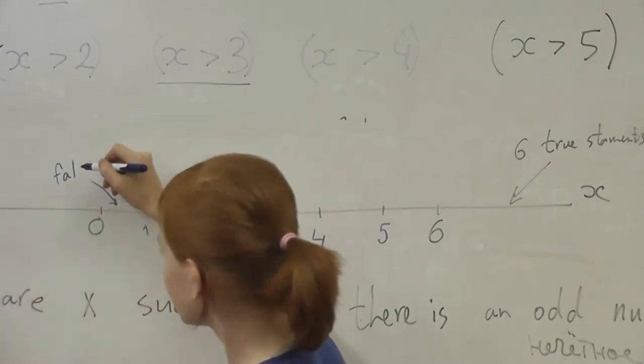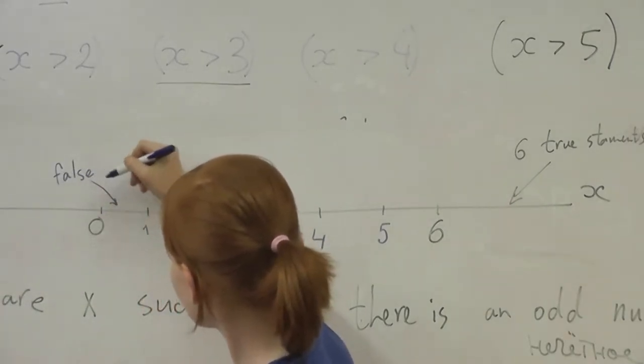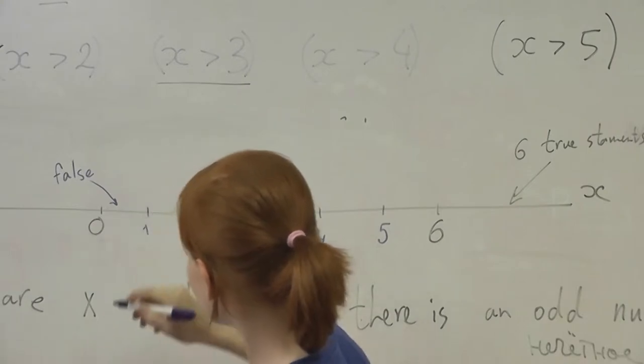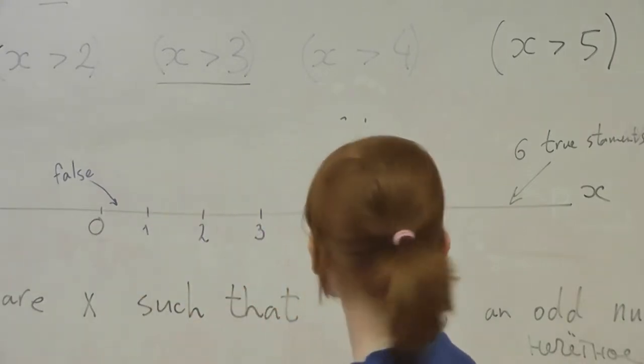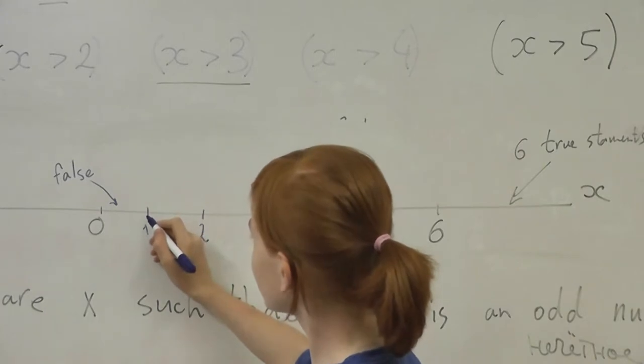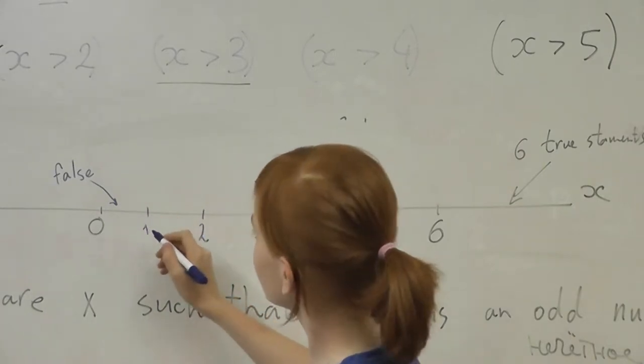So here, below one, less than one. All false. And so we are aware of the zone when there is only one true statement.